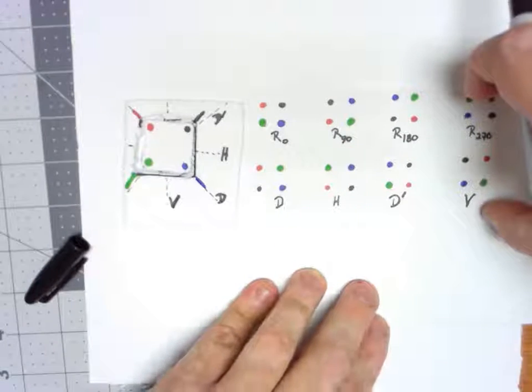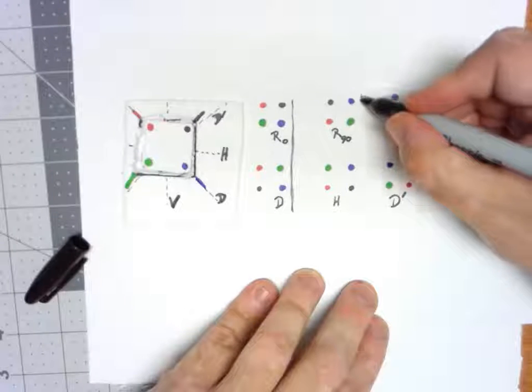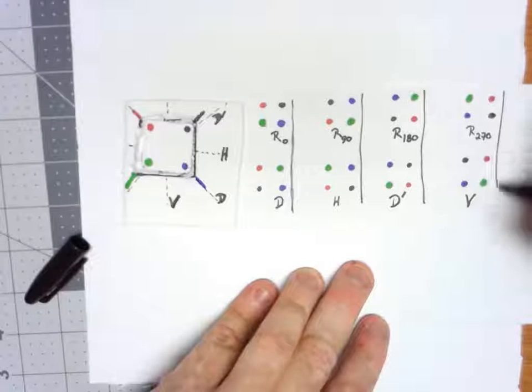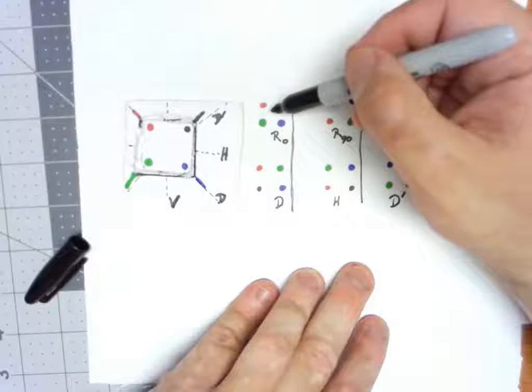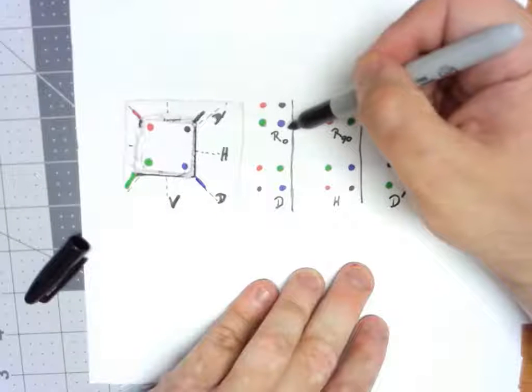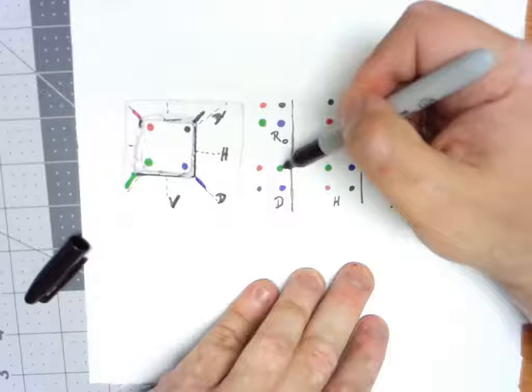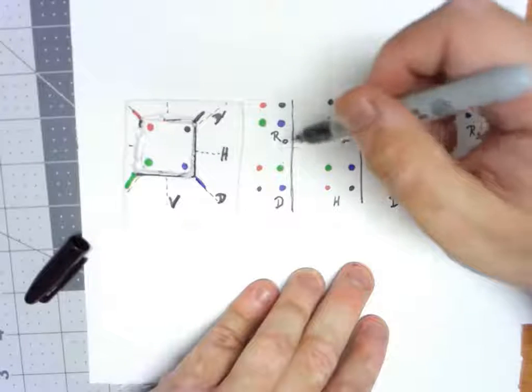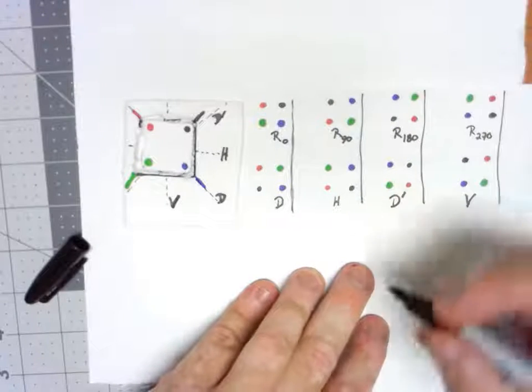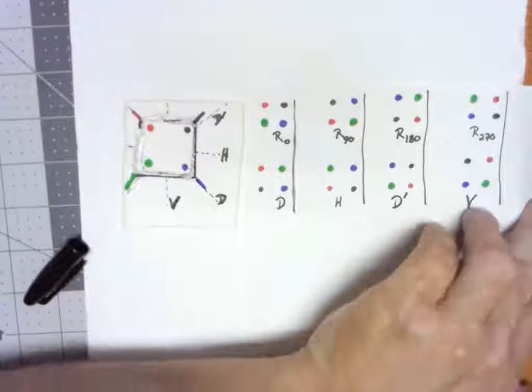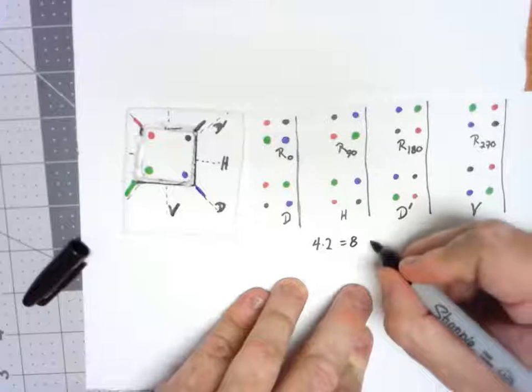I've laid this out so we can kind of see that. Both of these right here have the red in the same place. Both of these right here have the red in the same place. These have the red in the same place. These have the red in the same place. Once we know where the red is, the green can't be in the opposite corner because the blue has to be in the opposite corner. The green can either be there or there. There for that rotation, there for the reflection. So for each of the four places where red can end up, there are two places where the green can end up. So there are a total of four times two. Four times two gives us there can only be eight different places.